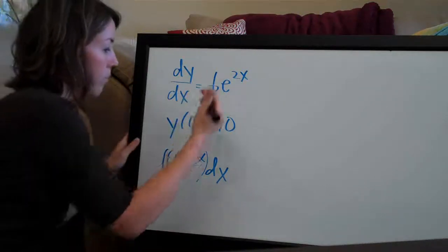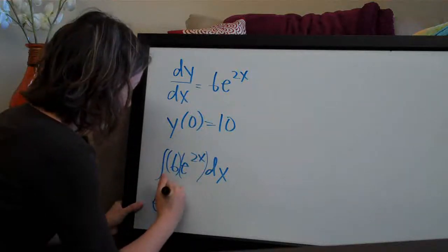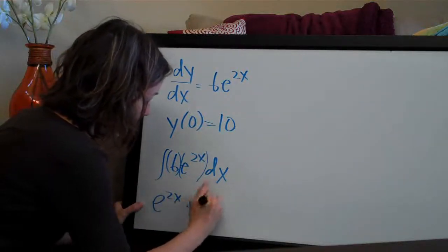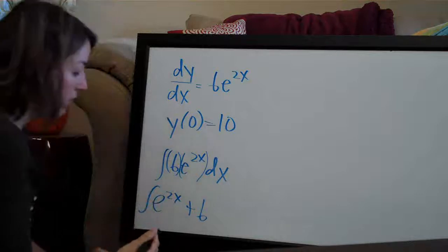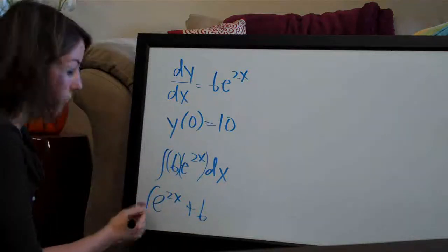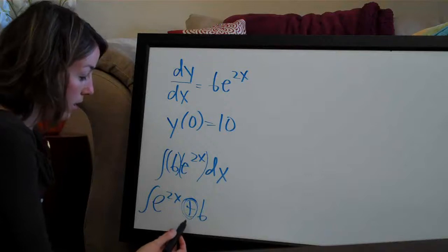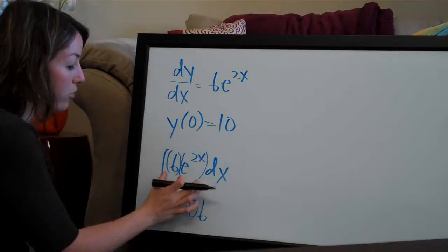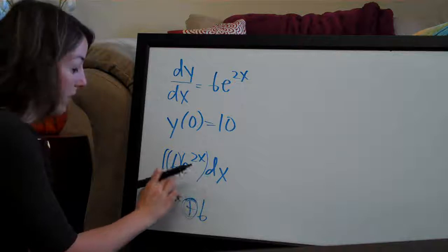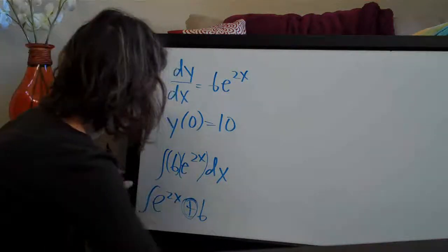If you had e^(2x) + 6 as your integral, you can't bring this out in front. You can't separate these terms because of the plus sign. It's only when you have one term like this and they're multiplied together that you can bring it out front.